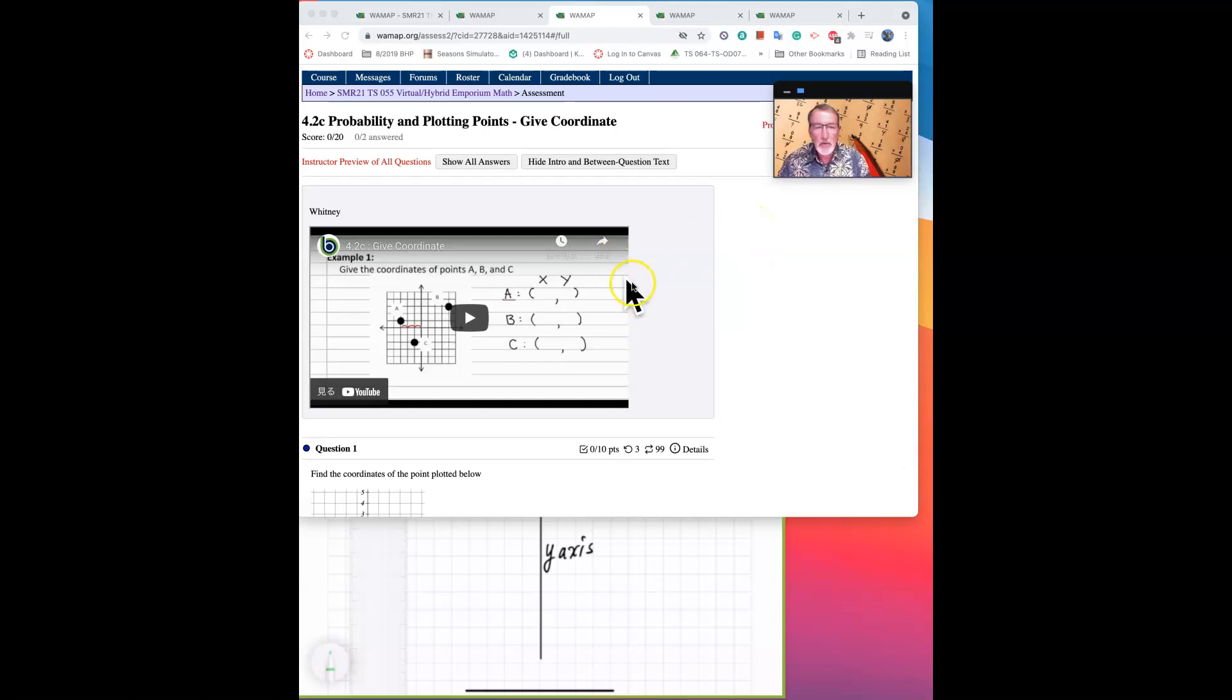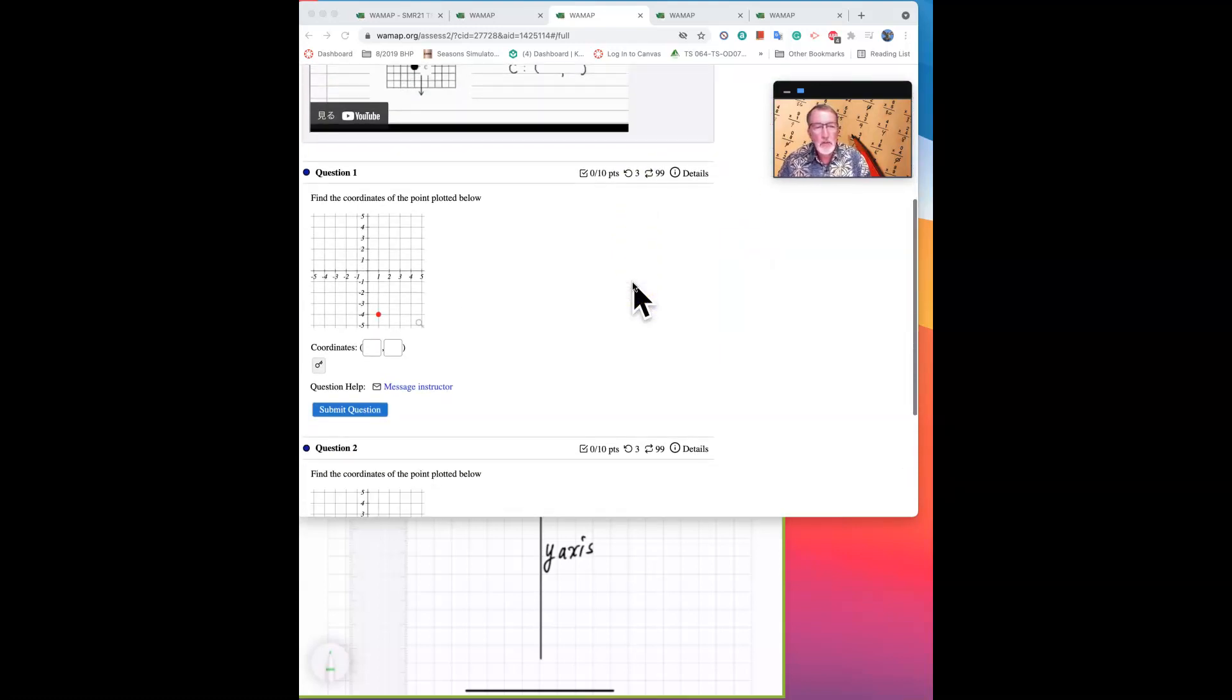So let's take a look at what they want. Question 1: Find the coordinates of the point plotted below. This is our first problem in the coordinate plane.